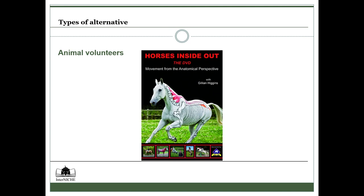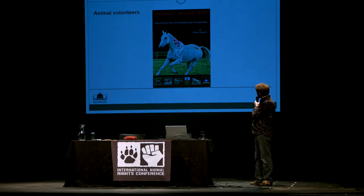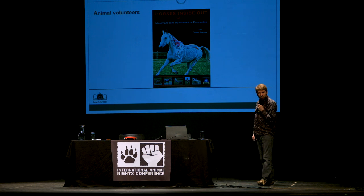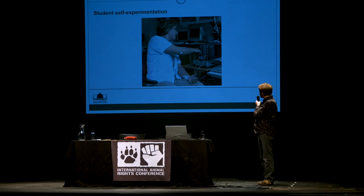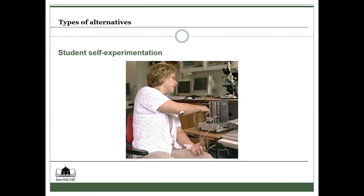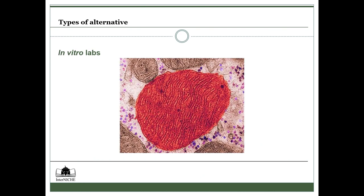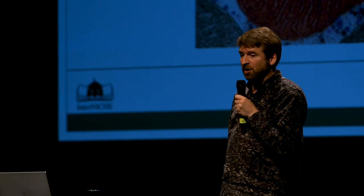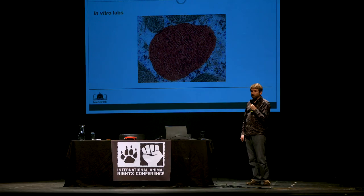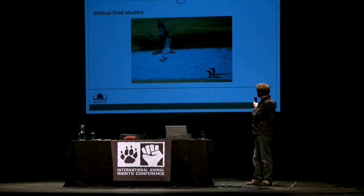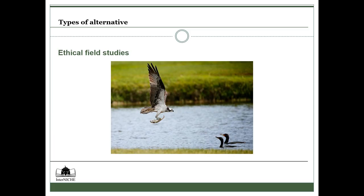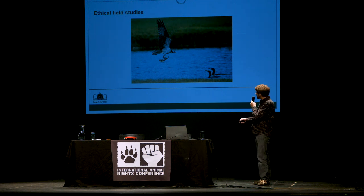You could put colored chalk on a horse and watch it move, looking at its musculature and bones — that's a sort of living anatomy programme rather than just focusing on killing for dissection. You can do experiments on yourself — software plus self-experimentation is really good for physiology. You can work in vitro in the fields of research and testing — alternatives within those fields are growing fast. And you can do ethical field studies: getting out of the lab and into the field, observing wild animals, and contributing to conservation and understanding of ecology. So these are the range of different alternatives.